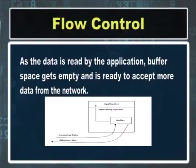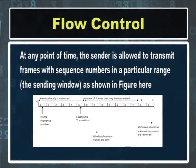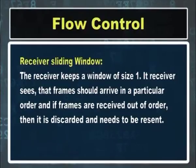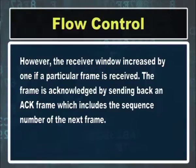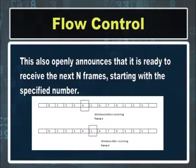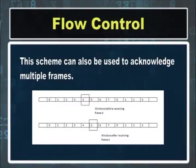At any point of time, the sender is allowed to transmit frames with sequence numbers in a particular range — this is the sender window. For the receiver sliding window, the receiver keeps a window of size 1 if frames must arrive in a particular order. If frames are received out of order, they are discarded and need to be resent. However, the receiver window increases by 1 when a particular frame is received correctly. The frame is acknowledged by sending back an ACK frame with the sequence number of the next expected frame, openly announcing readiness to receive the next n frames. This scheme can also be used to acknowledge multiple frames.